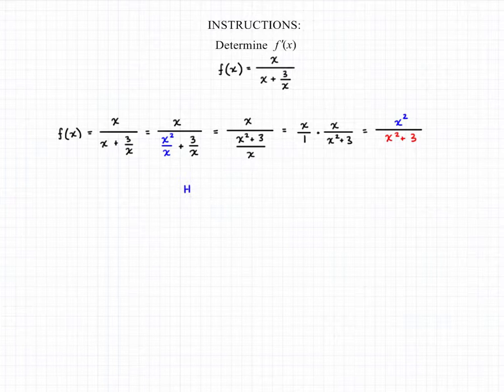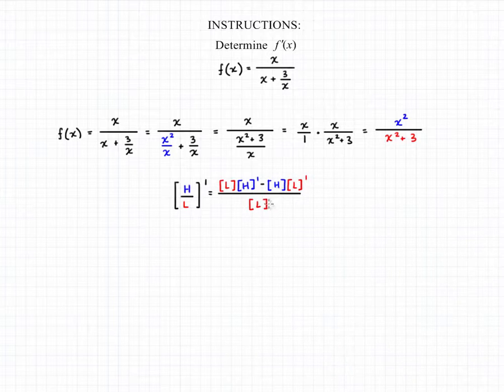Now the quotient rule tells us that if we have a function that is a quotient, it's made up of a fraction where we have a function in the numerator and a function in the denominator, we can find the derivative of that original function by taking the denominator, the low function, and multiplying it by the derivative of the high function, or the numerator, and then subtracting from that the high function multiplied by the derivative of the low function, all over the lower function squared.